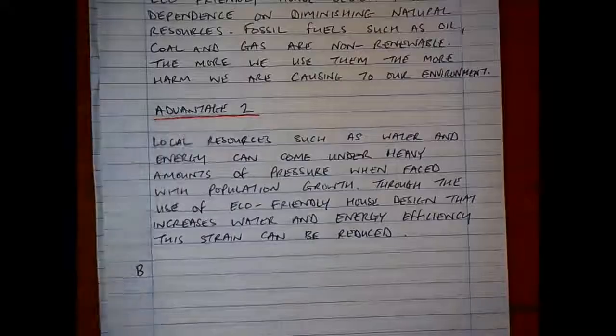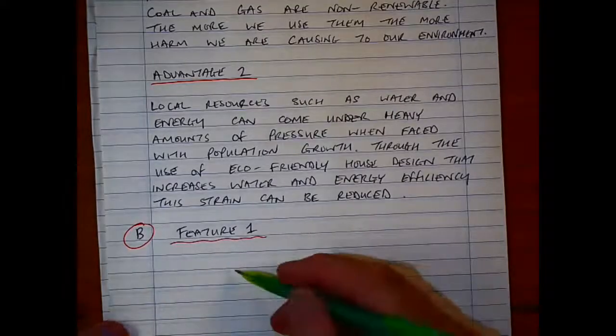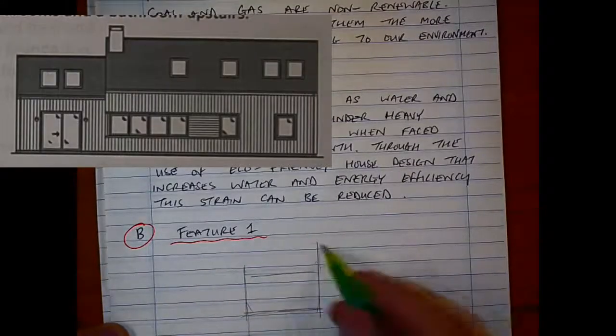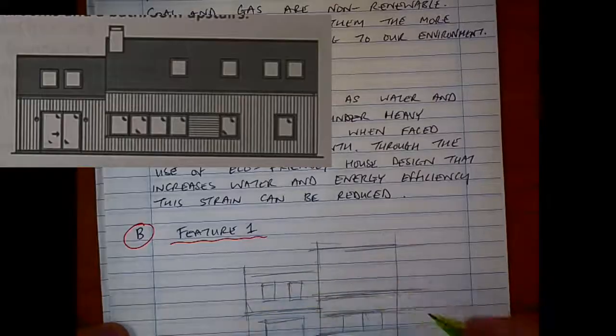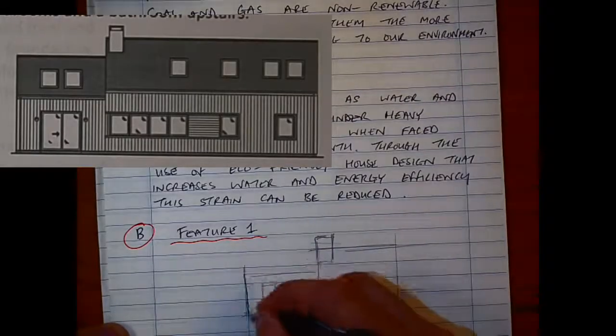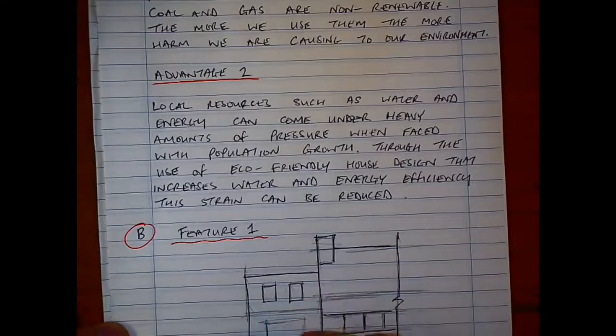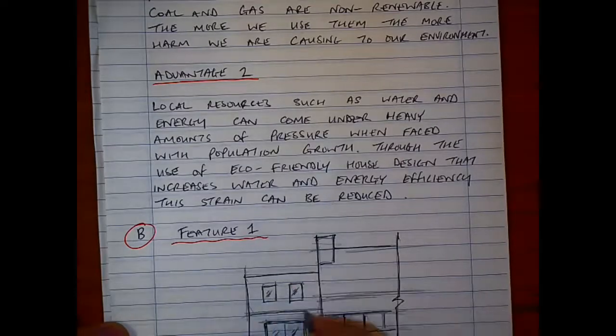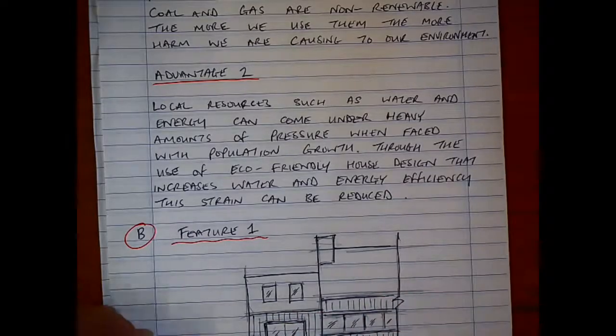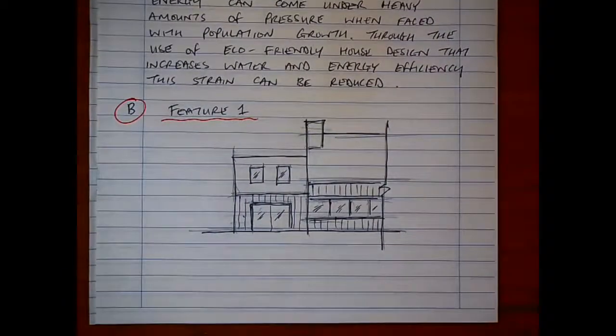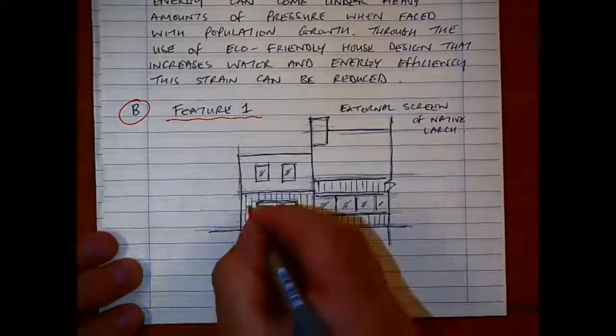Part B of the question asks for three features using notes and freehand sketches of what contributes to an eco-friendly design. The first thing you see in the picture shows the native larch, so I'm going to use a part of that sketch. I'm drawing a little bit of the porch and the main part of the building. It's not necessary to draw the whole thing to get my message across about the use of native larch being a timber finish that is locally sourced. It's carbon neutral material with low embodied energy, and the CO2 released in its manufacture is offset by the trees being planted. The external screen is what I'm highlighting here.